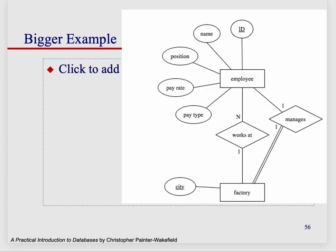Let me show you a bigger example that puts it all together. Here we have the relationship between factory and employee. It's interesting because there are actually two relationships we want to keep track of: the 'works at' relationship, because employees work in a factory, and the 'manages' relationship, because employees manage factories. In one case, employees work at zero or one factories, and factories have zero or more employees. In the other, employees manage zero or one factories, and a factory is managed by exactly one employee. This illustrates total and partial participation together.